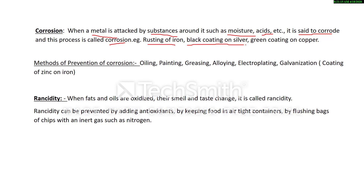For example, rusting of iron. Another example is black coating on silver — silver jewelry, if observed after some time, turns black because it is coated with silver sulfide, which is black in color. Also, green coating on copper — copper reacts with carbon dioxide, moisture, and oxygen in the atmosphere to form a green layer. We will discuss corrosion in detail in the chapter on metals and non-metals.